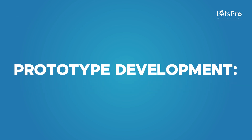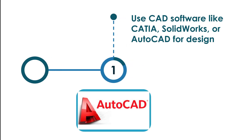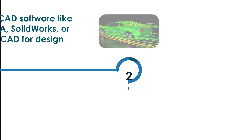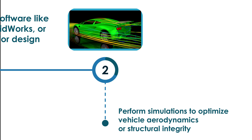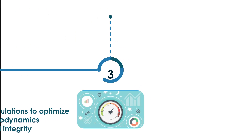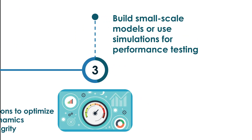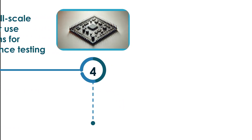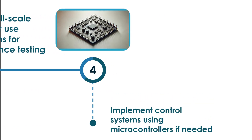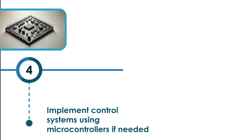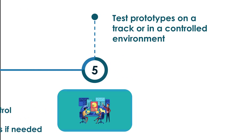For prototype development, use CAD software like CATIA, SOLIDWORKS or AutoCAD for design. Perform simulations to optimize vehicle aerodynamics or structural integrity. Build small-scale models or use simulations for performance testing. Implement control systems using microcontrollers if needed. Test prototypes on a track or in a controlled environment.